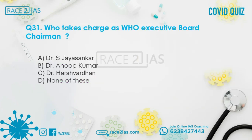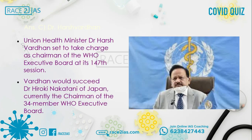Question number 31: Who took charge as WHO Executive Board Chairman? Option A: Dr. S. Jaishankar. Option B: Dr. Anup Kumar. Option C: Dr. Harshvardhan. Option D: None of these. The right answer is Option C, Dr. Harshvardhan. Our Union Health Minister Dr. Harshvardhan was set to take charge as Chairman of the WHO Executive Board at its 147th session. He would succeed Dr. Hiroki Nakatani of Japan, currently Chairman of the 34-member WHO Executive Board.